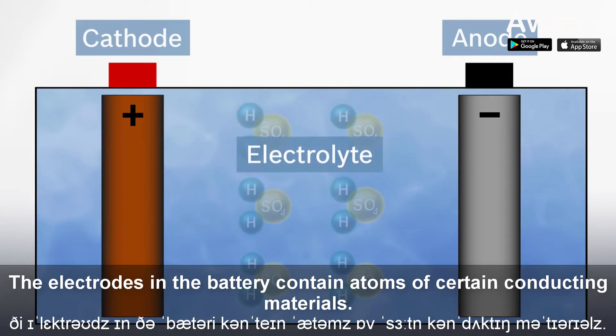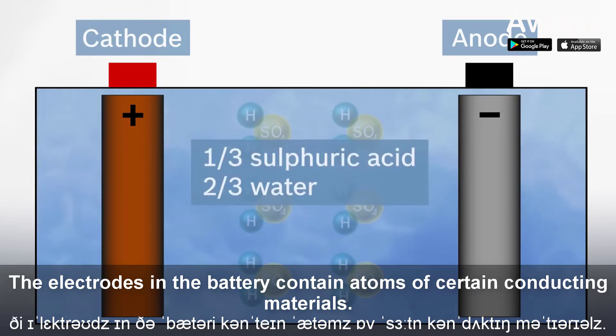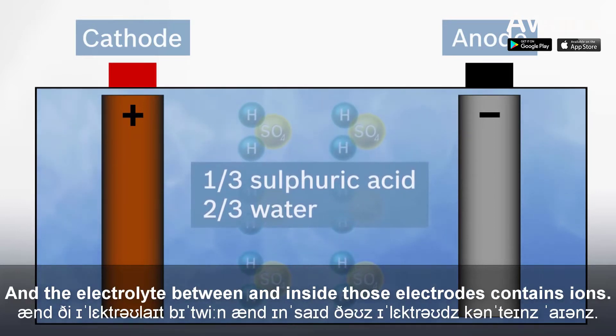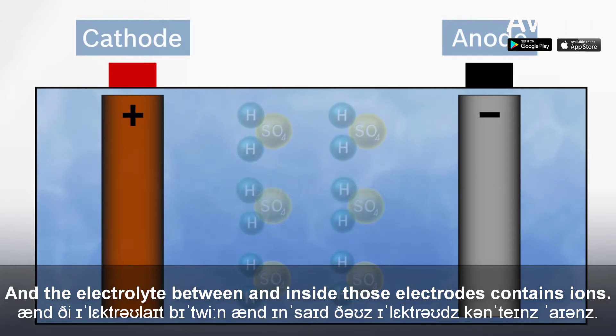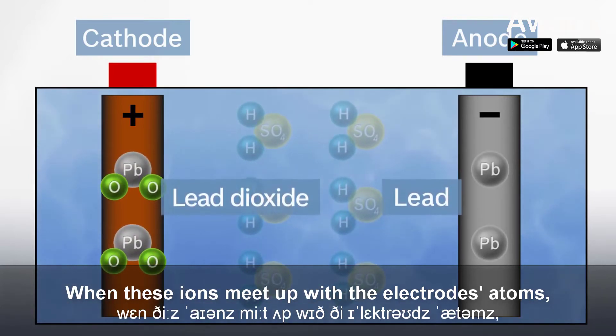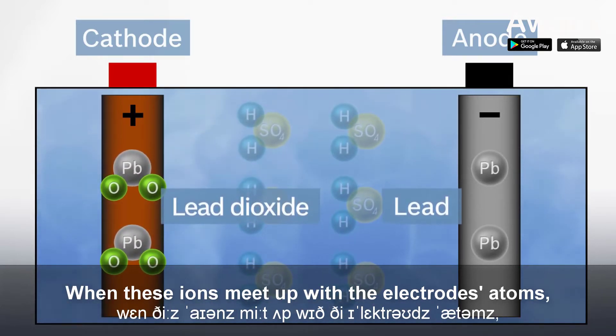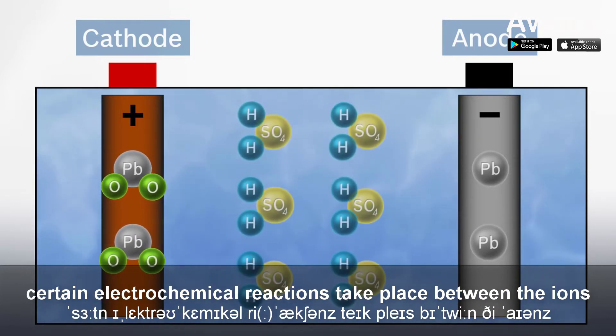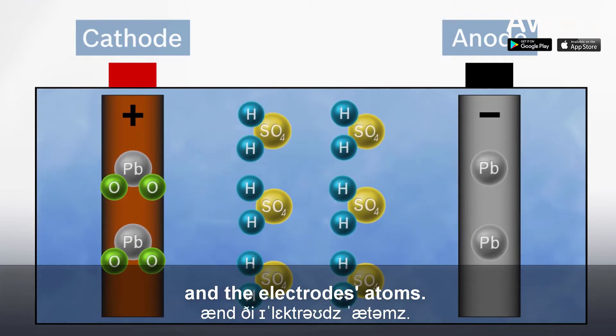The electrodes in the battery contain atoms of certain conducting materials, and the electrolyte between and inside those electrodes contains ions. When these ions meet up with the electrodes' atoms, certain electrochemical reactions take place between the ions and the electrodes' atoms.